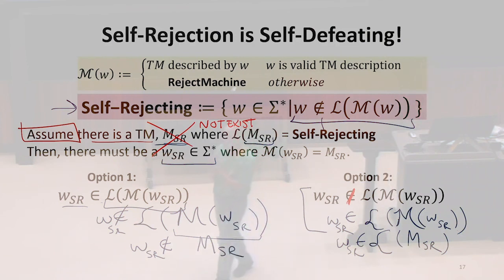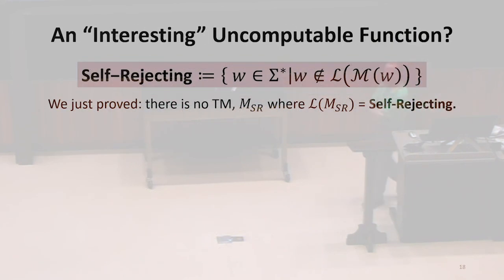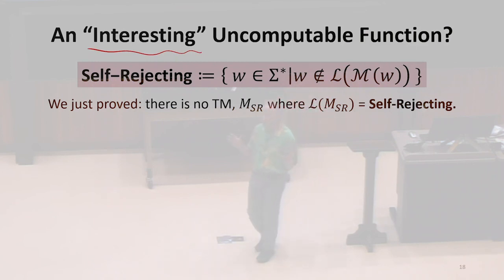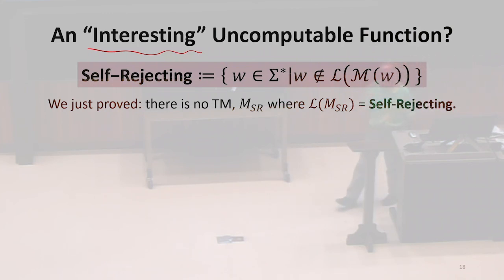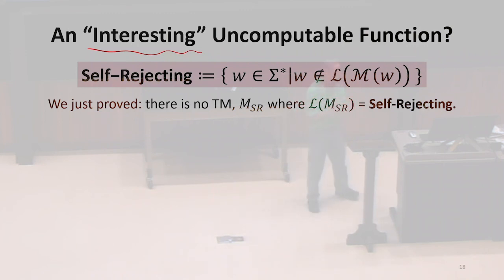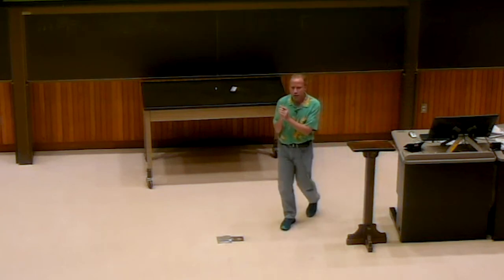It's a pretty big result. We said we were going to get to an interesting uncomputable function. Are we satisfied? Self-rejecting is a nice way to see something that's uncomputable — it's not just saying the cardinalities are bigger so there must be one, it is a specific function. But maybe it's not the most interesting one. We have proved there's an uncomputable function, but we want to get to something that seems more interesting. Before getting to that, we're going to get to universal machines.